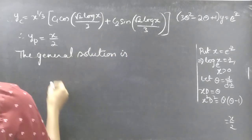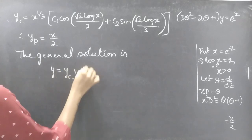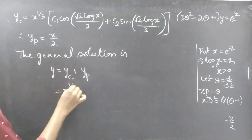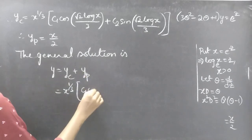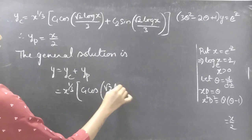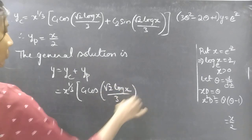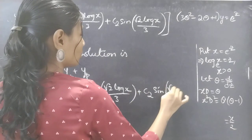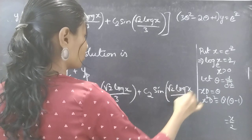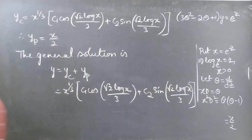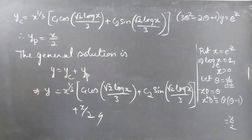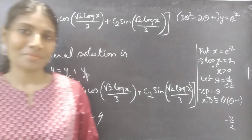The general solution is given by y equal to yc plus yp. Therefore y equals to x power 1 by 3 into c1 cos(root 2 log x by 3) plus c2 sin(root 2 log x by 3) plus x by 2. These are the required solutions.